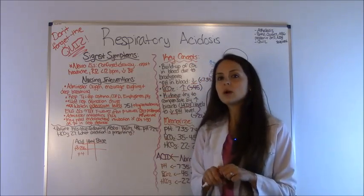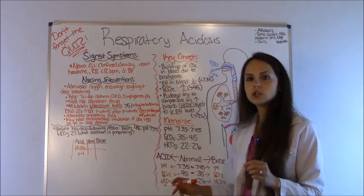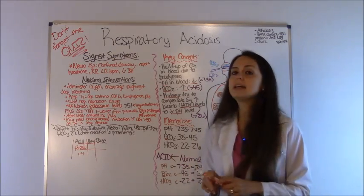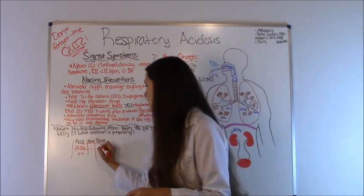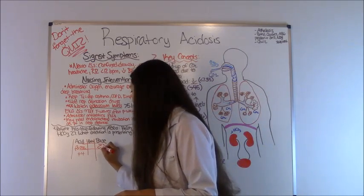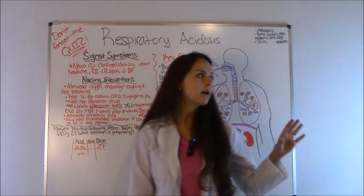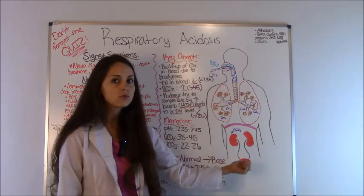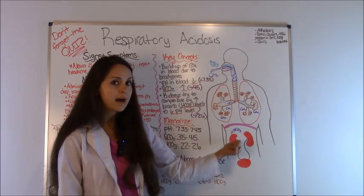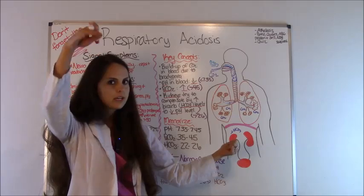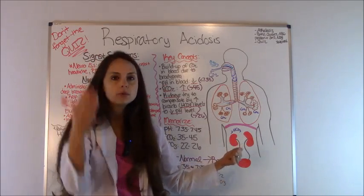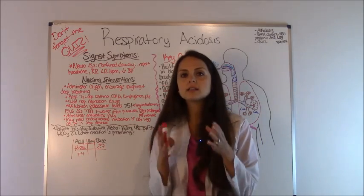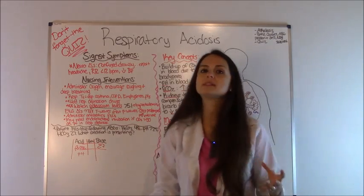Our bicarb is 27. We know a normal bicarb is 22 to 26, and it's abnormal, it's 27. According to our chart, it is basic. So we're going to put it over here. Remember at the beginning of this lecture, we talked about how whenever there's a buildup of CO2 in the lungs, the kidneys are going to try to fix this by releasing bicarb HCO3. So the levels are going to increase abnormally. Why? Because it wants to bring that pH down, and this is what we're seeing. So the body is trying to compensate.